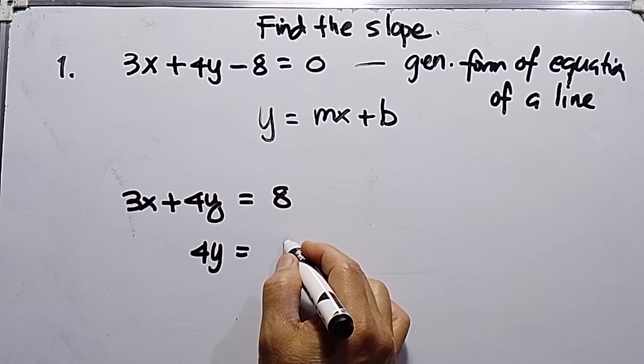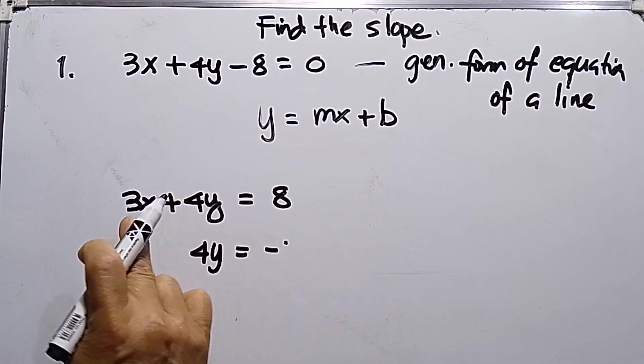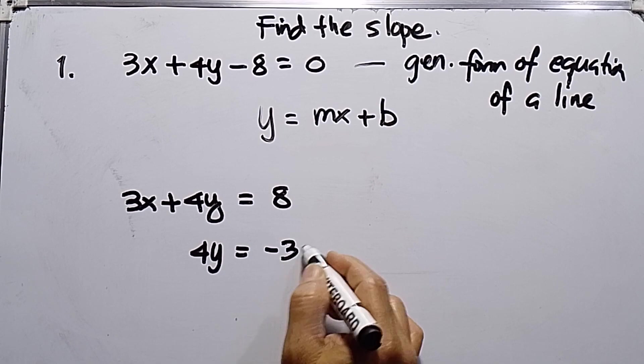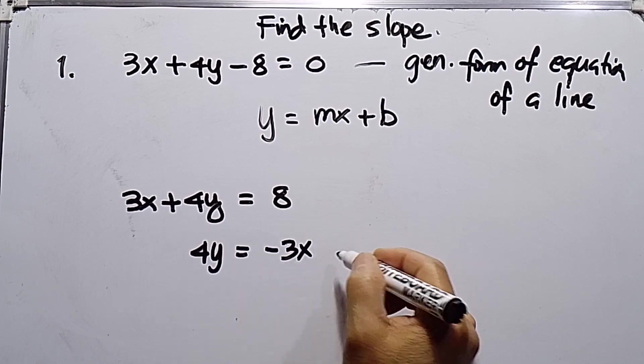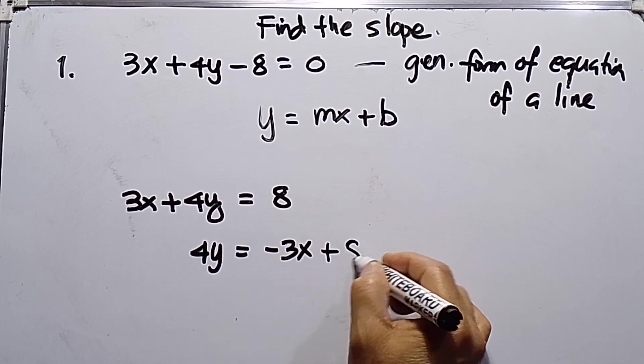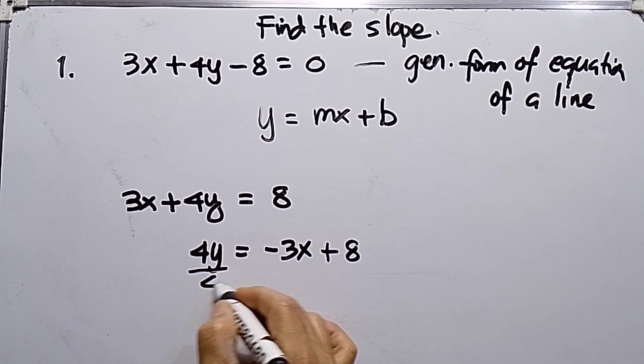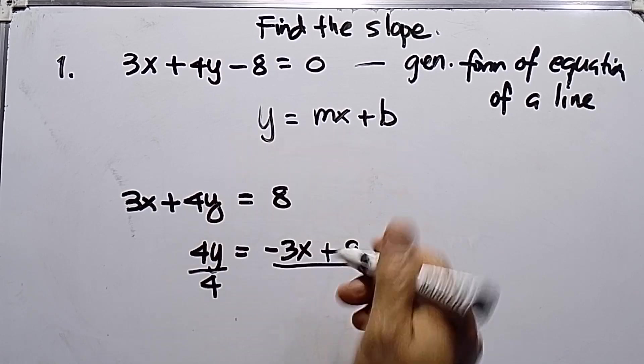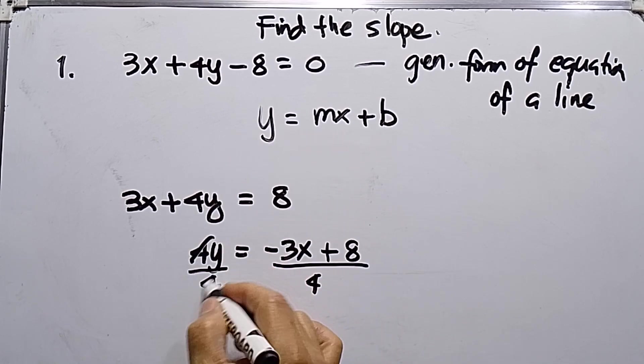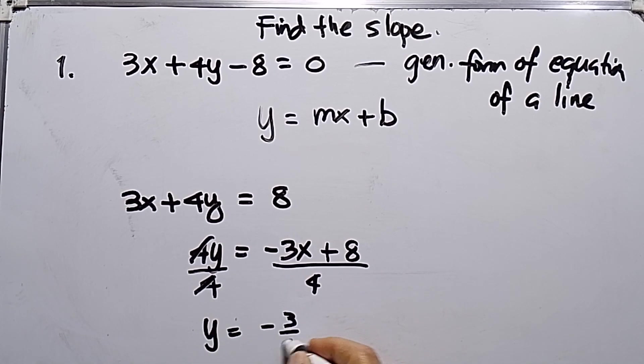Since this is positive 3x and we transpose it to the right, it becomes negative 3x, and then just copy plus 8. So divide by 4 to solve the value of y on both sides. y equals negative 3 over 4x...